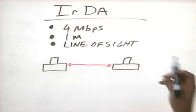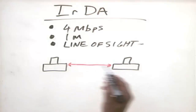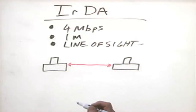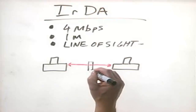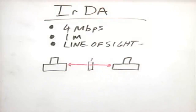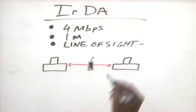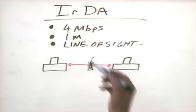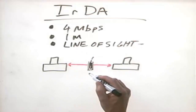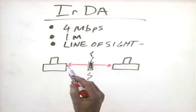One of the key problems with infrared was signal interruption. Imagine sending data back and forth between two workstations and somebody sets their 32-ounce soda cup right between them. The signal is interrupted and the network is broken — those two systems can no longer communicate with each other.